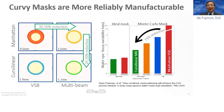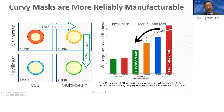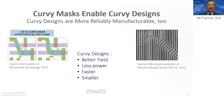That was about the nominal shape. This study slide is from Ryan Pearman at PMIJ in 2019, where variation on the wafer is studied between VSB versus multi-beam curvilinear versus Manhattan. The variation on the wafer is also reduced with curvilinear — which is what Ezekiel was referring to.